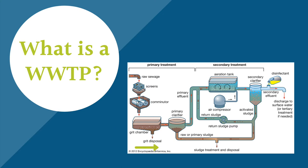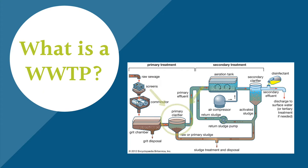In the primary treatment stage, wastewater moves through a series of screens, grinders, and grit chambers to remove solids, sand, and gravel from the raw sewage. Before moving into the aeration tanks, the material is allowed to settle, creating sludge that rests at the bottom of the tank. From here, the wastewater exits at the top of the tank and moves into the aeration tanks.